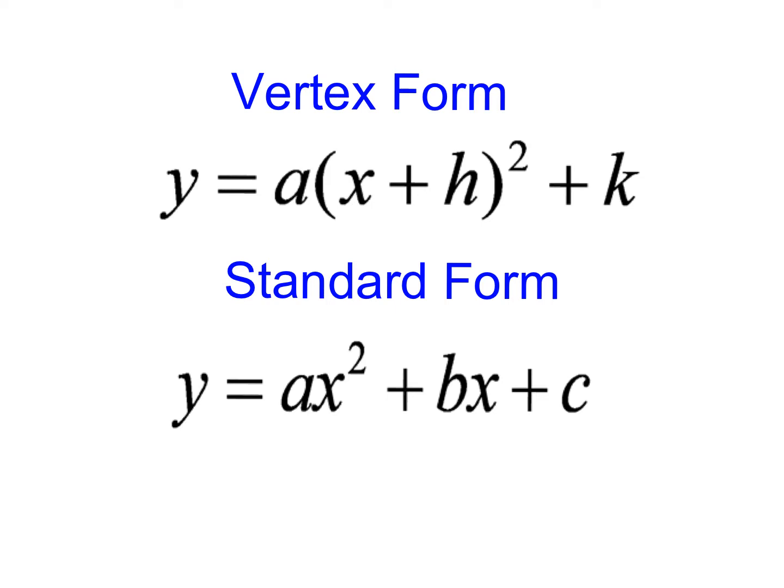Let's refresh our memories about what these two forms look like. Remember that vertex form is written so that it has an h value and a k value. The h value is inside parentheses squared with x, and then the k value is on the outside.